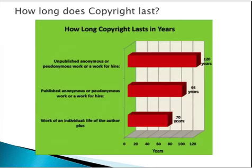Another question we get all the time is, how long does copyright last? The short answer is it lasts a long time. For an individual work — take the example of a novel — the life of the author plus 70 years is how long the copyright will last. If you have an anonymous work, a work with a pseudonym, or a work for hire — say something written for the government while employed there — it will last the life of the author plus 75 years. An unpublished anonymous or pseudonymous work will last the life of the author plus 120 years.